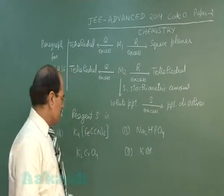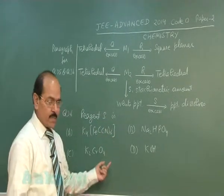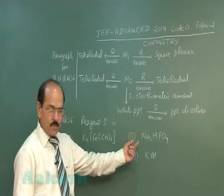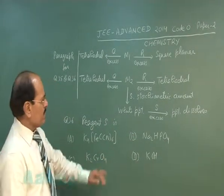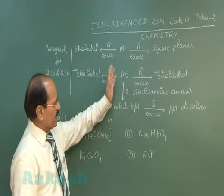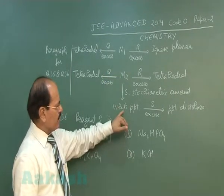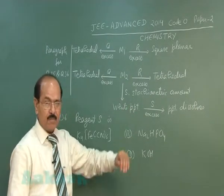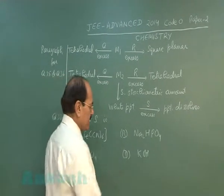Question 36 asks what reagent S is. Four options are given: K₄Fe(CN)₆, disodium hydrogen phosphate, potassium chromate, and potassium hydroxide. Since zinc ion forms tetrahedral complexes with both HCl and KCN, zinc ion with KOH will form a white precipitate of zinc hydroxide, which dissolves in excess KOH. So reagent S must be KOH.